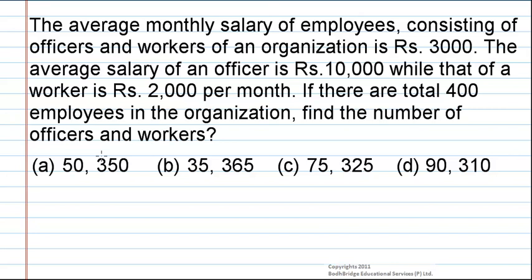The average monthly salary of employees consisting of officers and workers of an organization is 3,000 rupees. The average salary of an officer is 10,000 rupees while that of a worker is 2,000 rupees per month. If there are a total of 400 employees in the organization, then find the number of officers and workers.